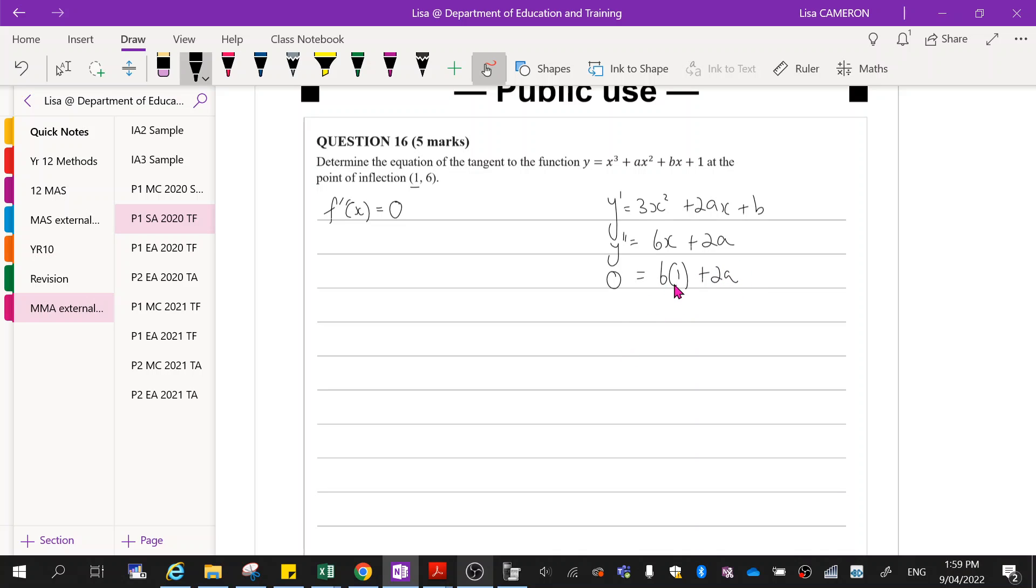Meaning that now I can just rearrange this to find out what a is. So minus 6 is equal to 2a. So then a is equal to minus 3. Okay, so we found out what a is.